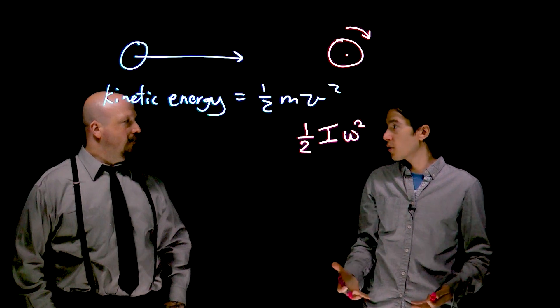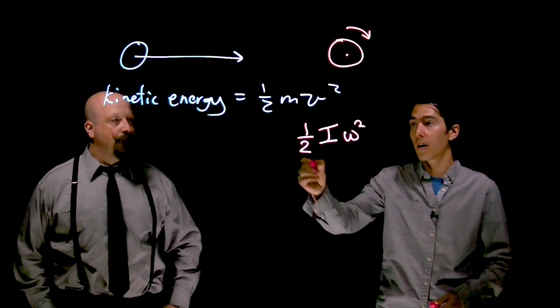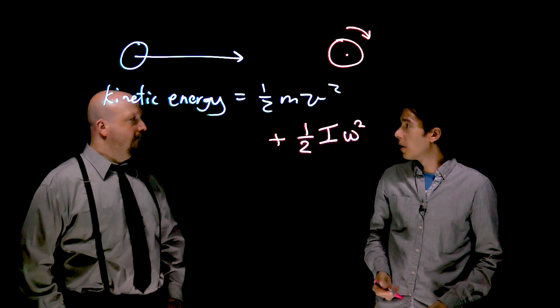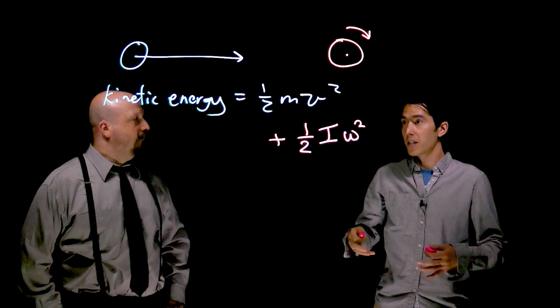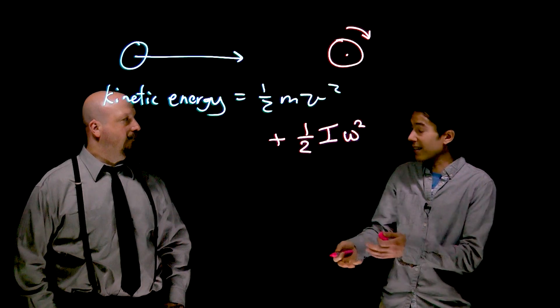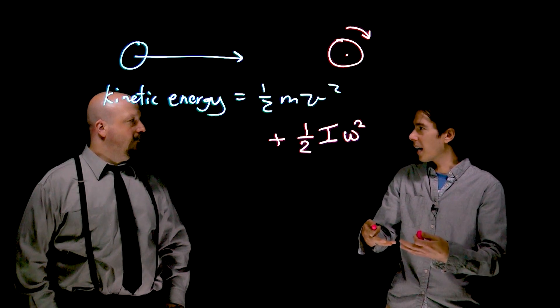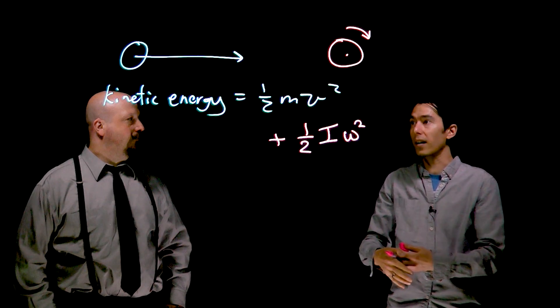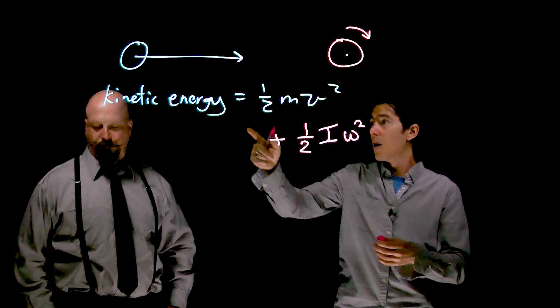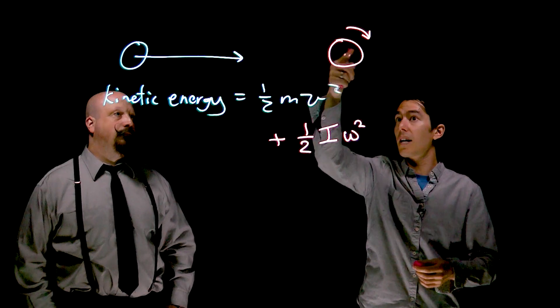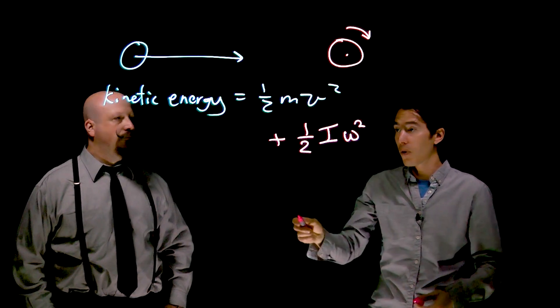When we consider the total energy of that wheel on the car, it's going to be the sum of those two. The types of problems we'll look at is exactly that situation where you've got something that's rolling, not spinning out like a car on ice, but rolling in good contact. There's going to be this connection between how far it travels and how much it spins, and we've seen these connections before.